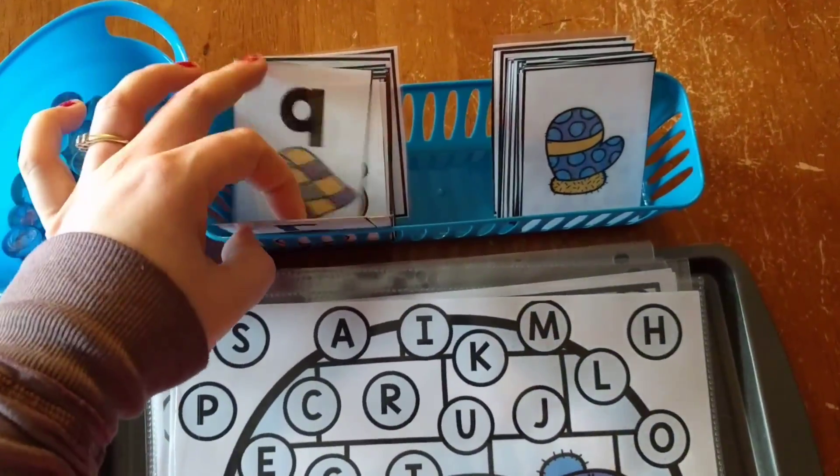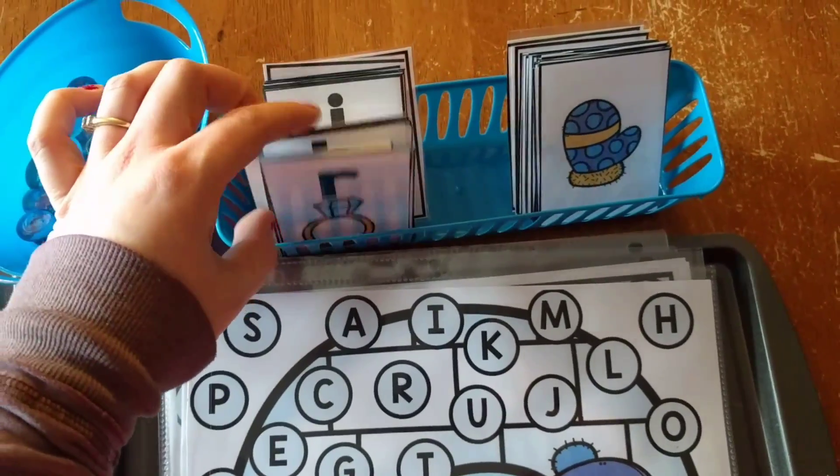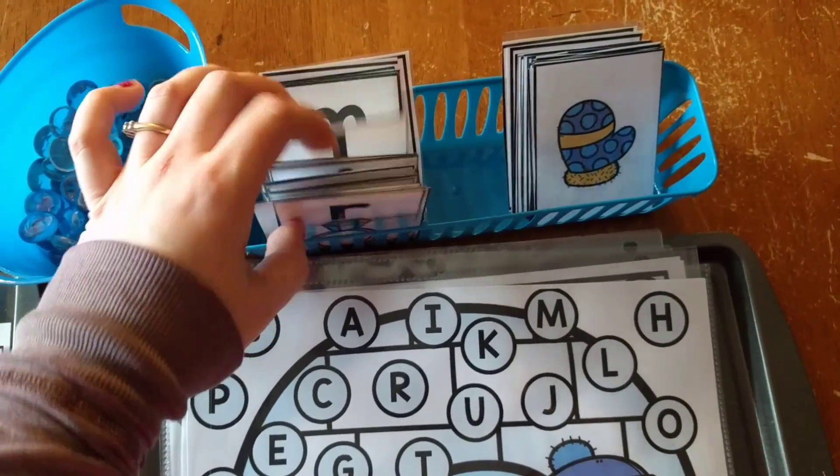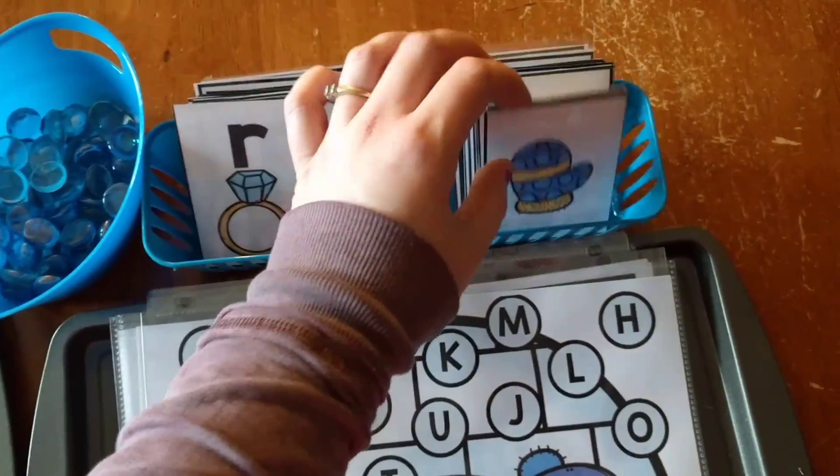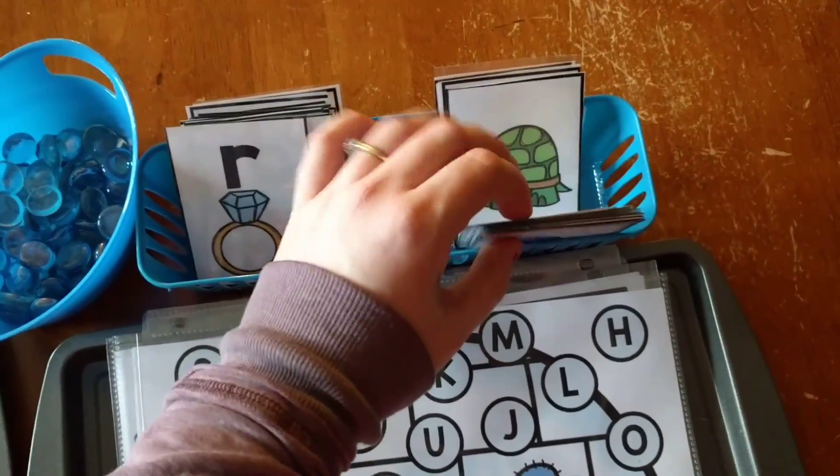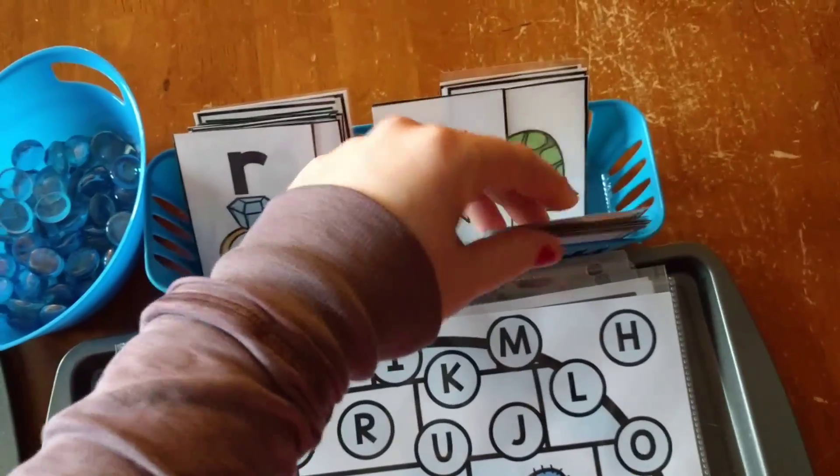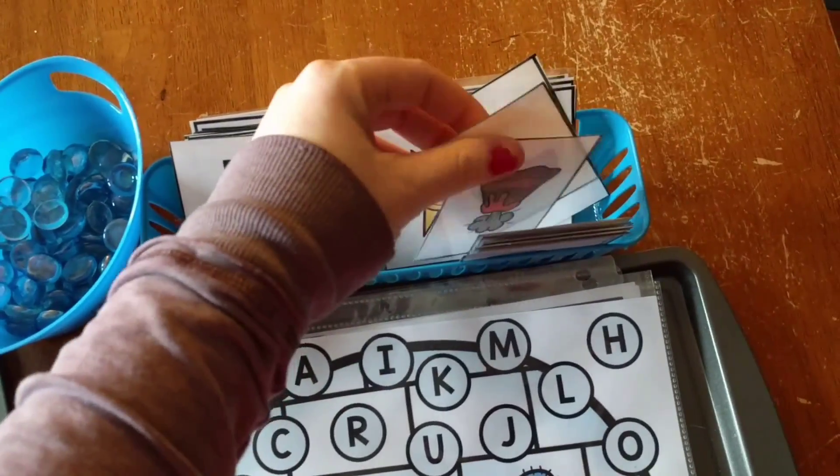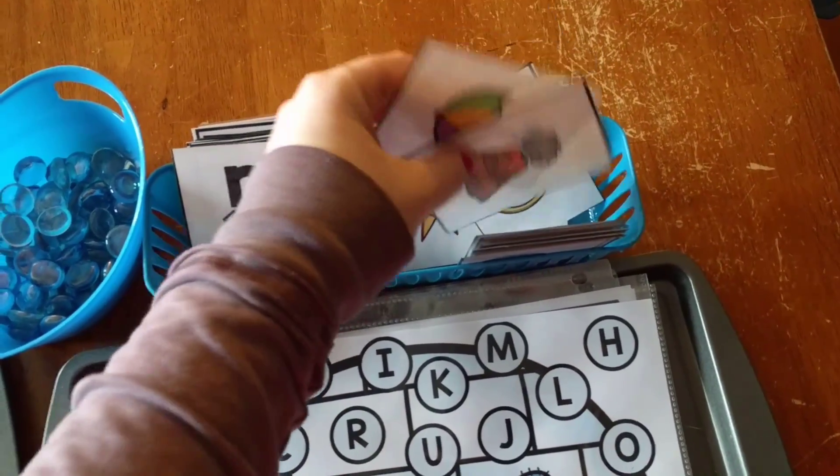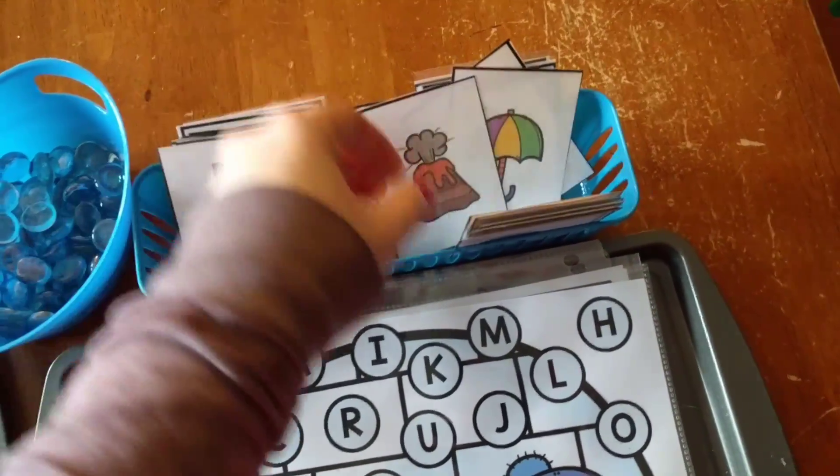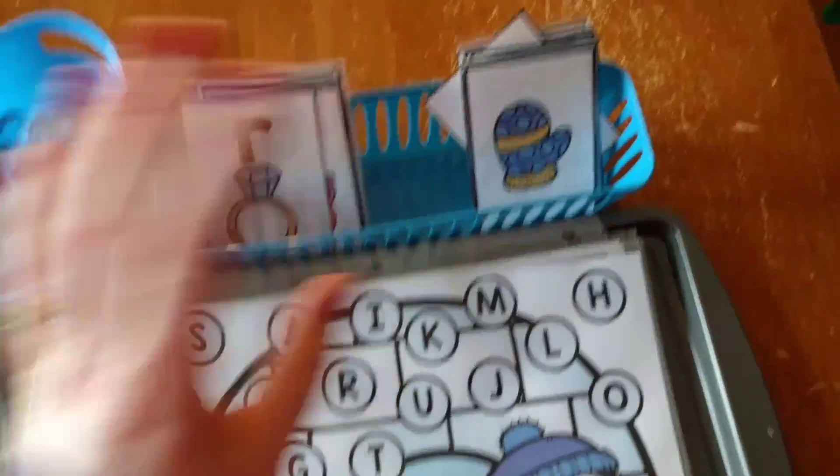But anyway, it comes with these mats that you saw, and it also comes with alphabet cards with the lowercase letter on them, and it also comes with the alphabet cards, just the pictures. And here's how you use them.